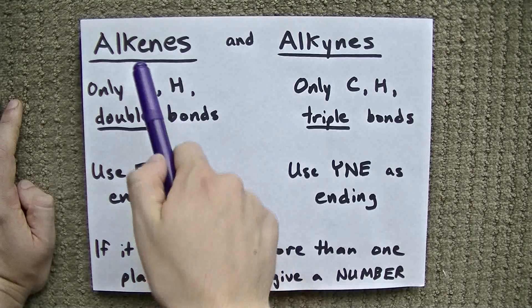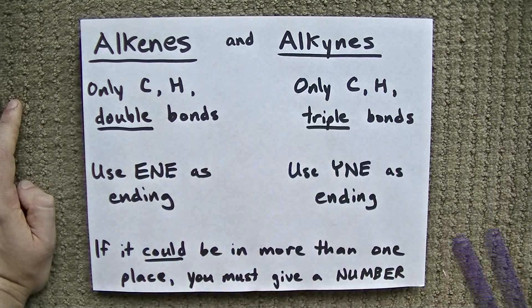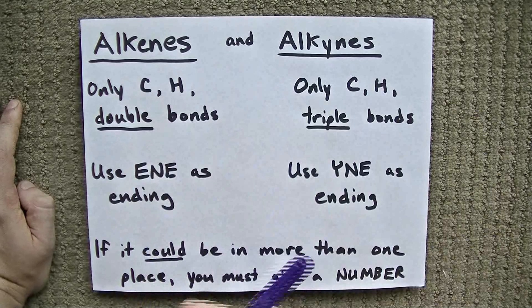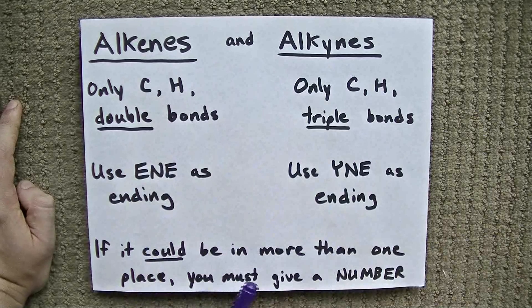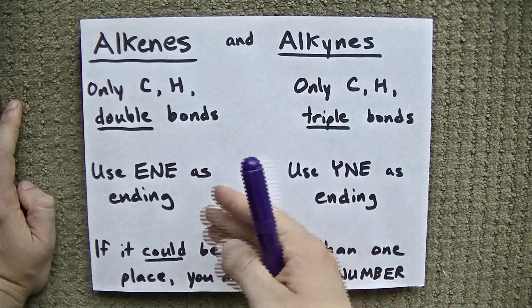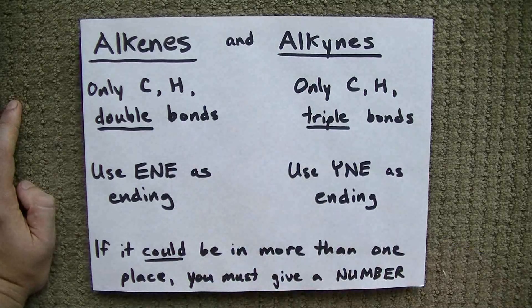And what really makes these different from alkanes is that if the double or triple bond could be in more than one place in the molecule, then you're going to have to tell us where it is. You're going to have to give us an index or a number to show us where that double bond is.